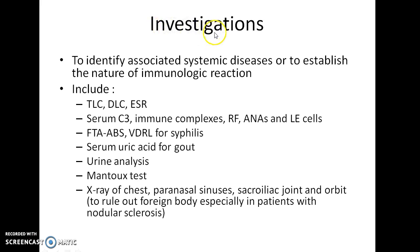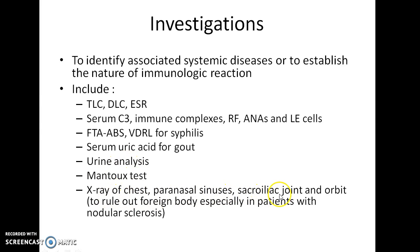What are the investigations done in a case of scleritis? Investigations are done to identify associated systemic diseases or to establish the nature of the immunologic reaction. These include total leukocyte count, differential leukocyte count and ESR, serum C3 immune complexes, rheumatoid factor, antinuclear antibodies and LD cells, FTA-ABS and VDRL for syphilis, serum uric acid for gout, urine analysis, Mantoux test, and X-ray of chest, paranasal sinuses, sacroiliac joint, and orbit — done to rule out foreign body, especially in patients with nodular scleritis.